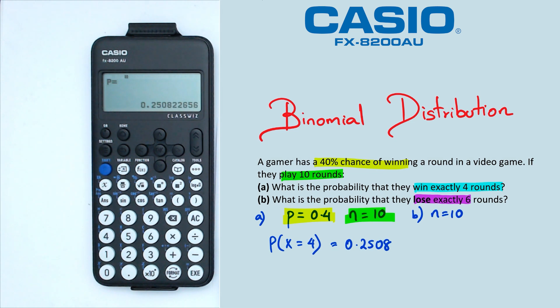So we should get 0.258 as the probability. However, when we're doing this question, and we want to actually find the probability that they lose six rounds, our probability changes. And I'm talking about the probability of losing. So if probability of winning is 0.4, then probability of losing is 0.6.